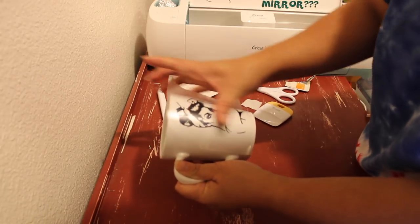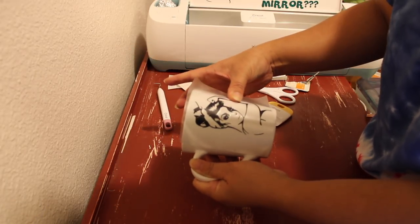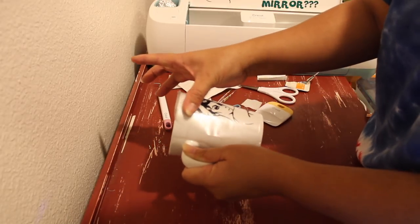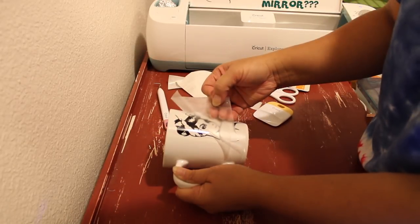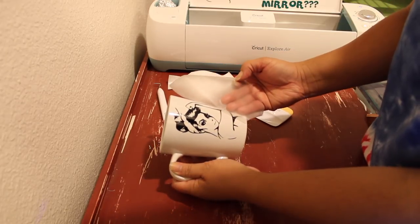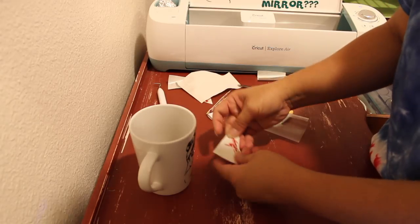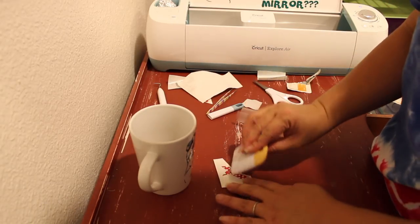So I just press in the middle and I go up and down with my finger, slowly removing the transfer tape. Now I'm going to work on the second layer and I'm going to burnish.